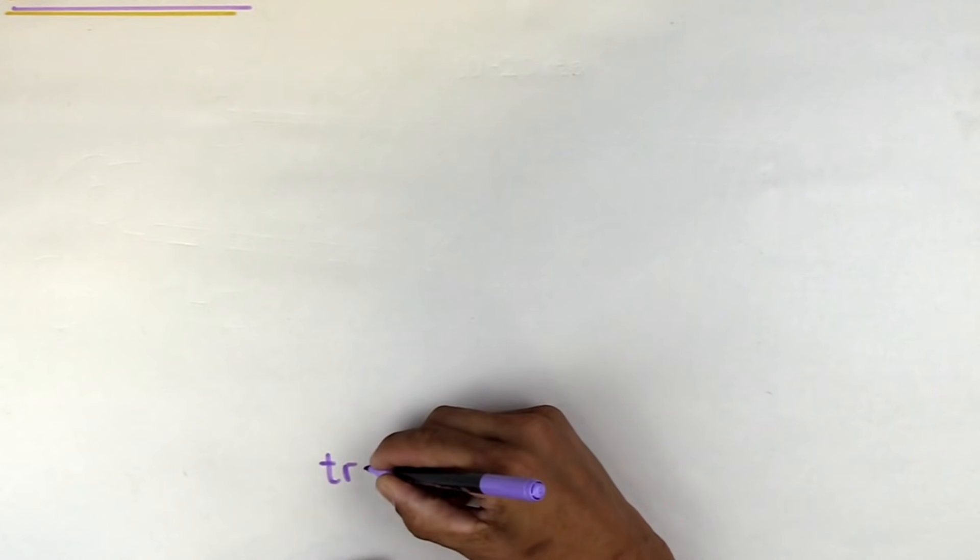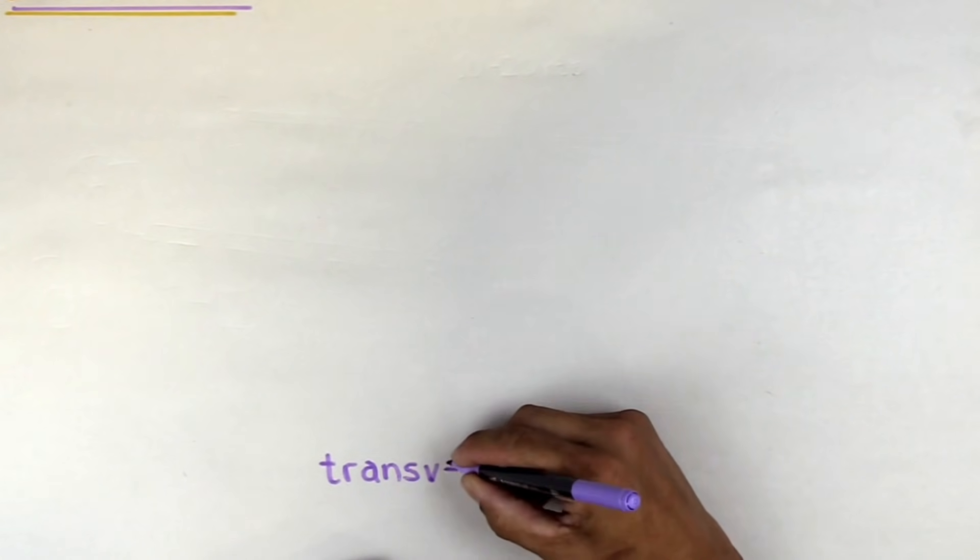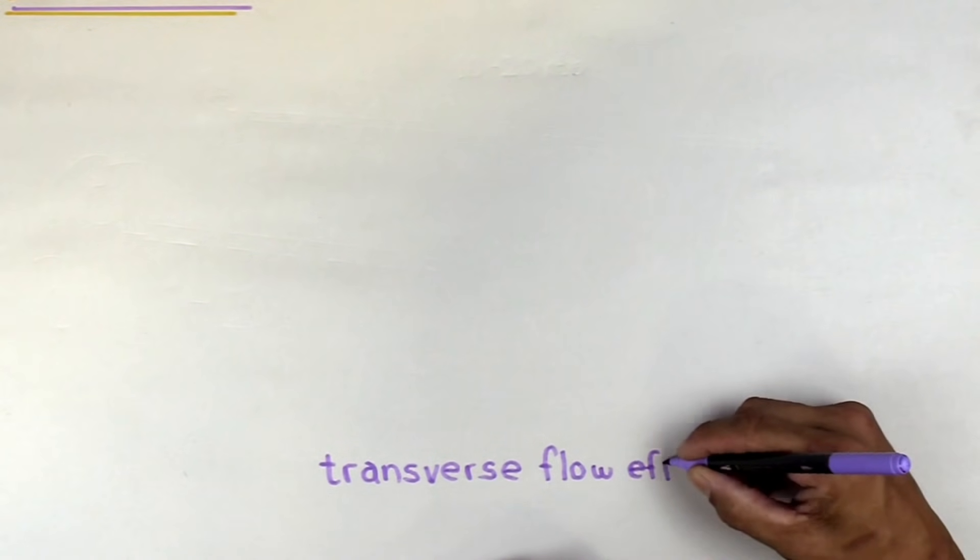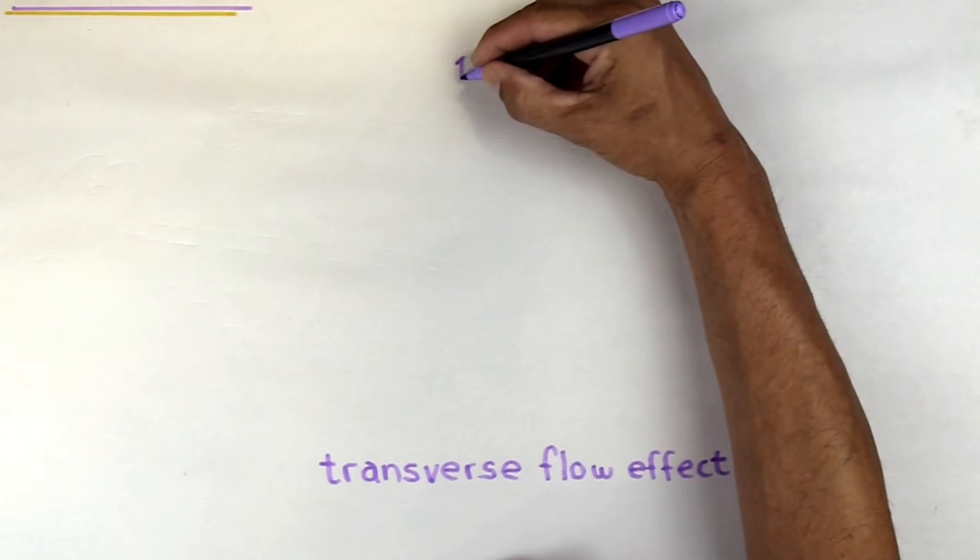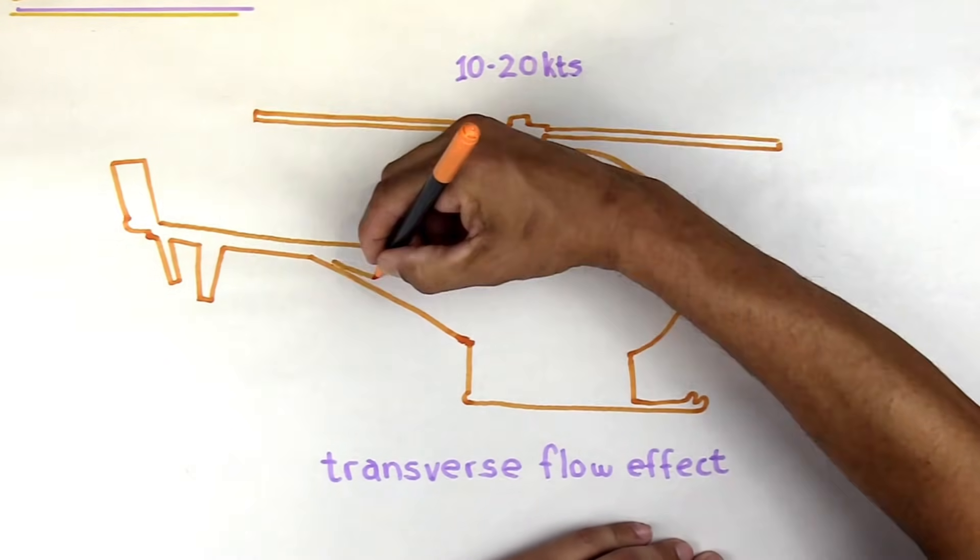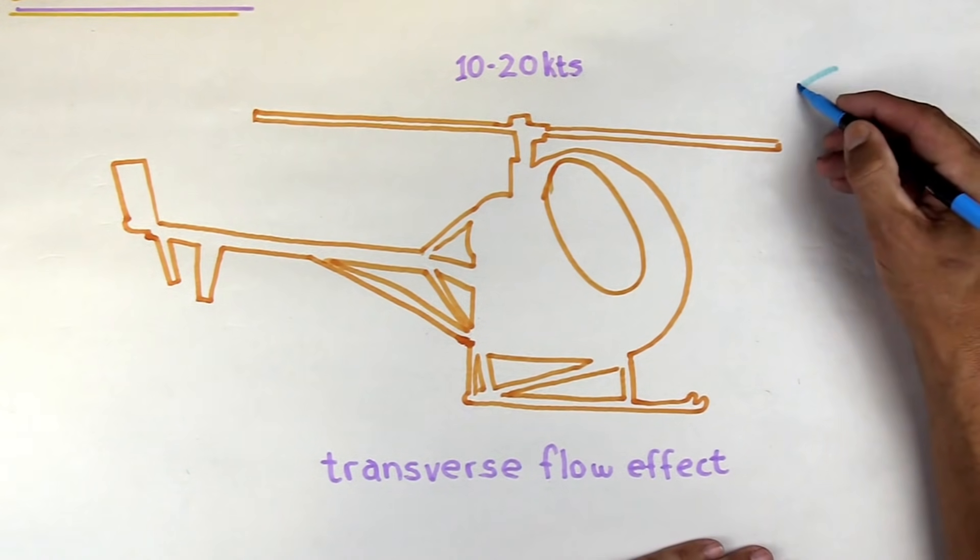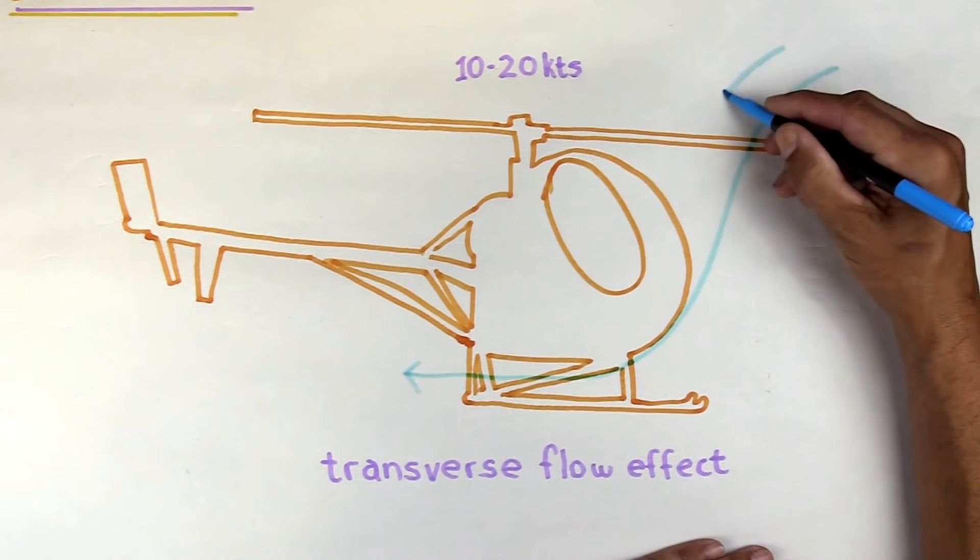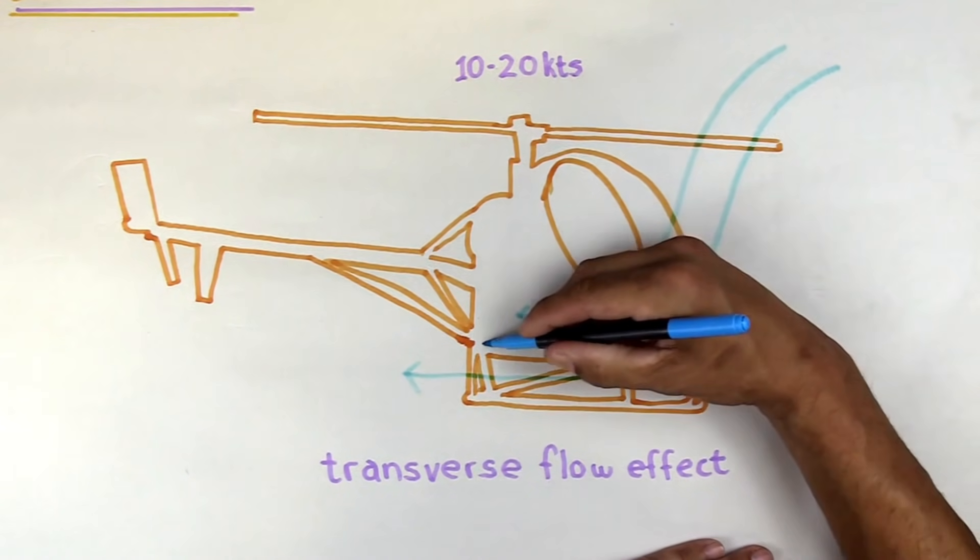This happens between 10 and 20 knots. What happens is you can kind of almost think of it as the front half of the blade is in clean air, the back half is still in dirty recirculated air. So we're starting to go a little bit faster.